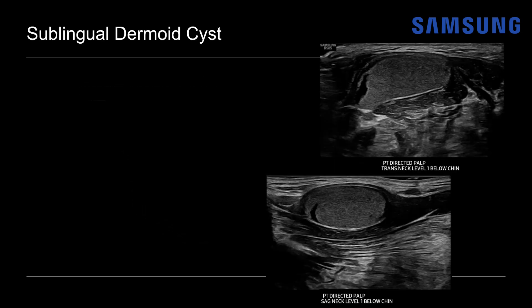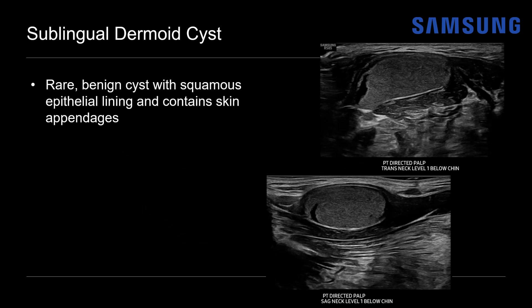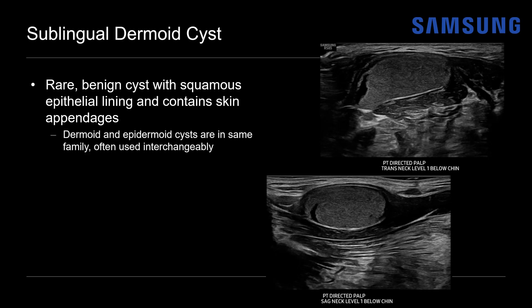This turned out to be a sublingual dermoid cyst. These are rare benign cysts with a squamous epithelial lining that contain skin appendages. Dermoid and epidermoid cysts are in the same family and the terms are often used interchangeably at the floor of the mouth. Technically, epidermoid cysts are less common and tend to contain fluid contents only, so they'll usually appear more simple compared to dermoid cysts in this region.